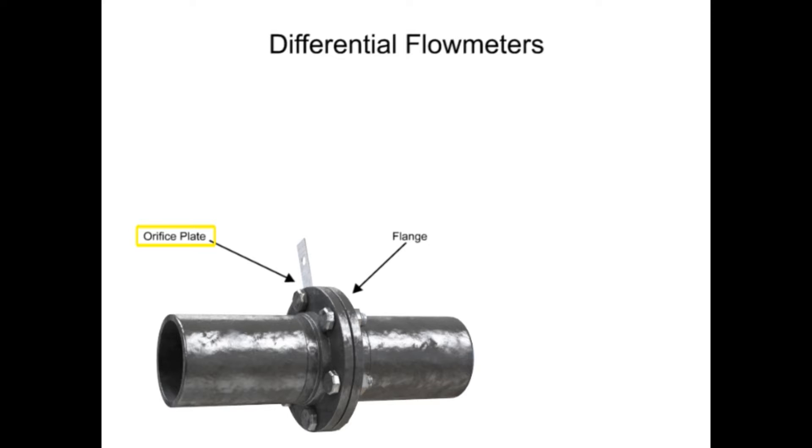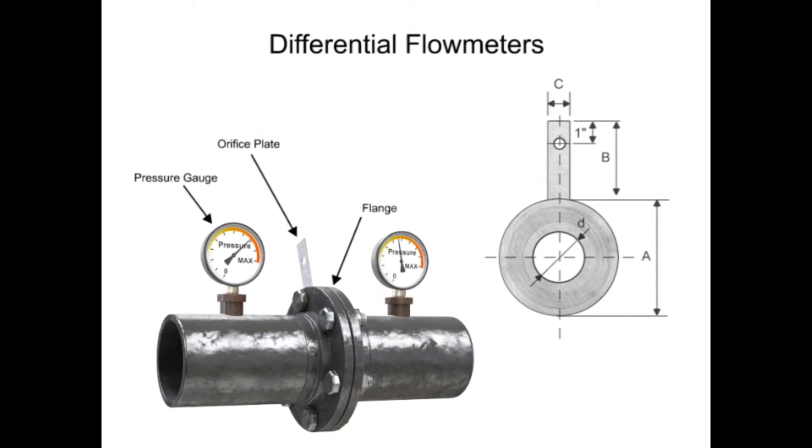The orifice plate of the flow meter is comprised of a circular metal disk with a specific hole diameter that reduces the fluid flow in the pipe. Pressure taps are added on each side of the orifice plate to measure the pressure differential.